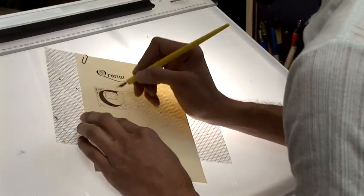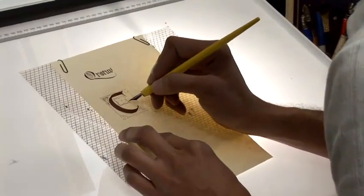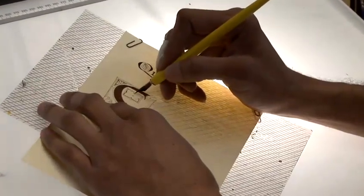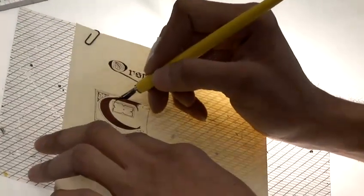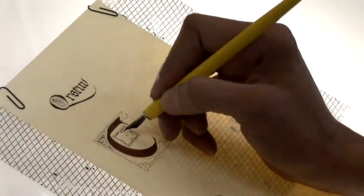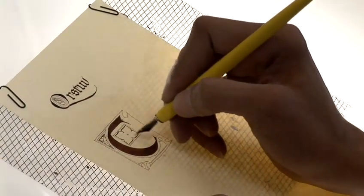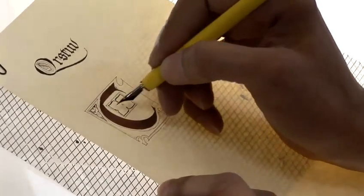Now fortunately this manuscript pen company nib is also slightly flexible so it allows you to really play with the shape and add weight to the thing which makes it just a little bit more alive. I'm making these little over loops.